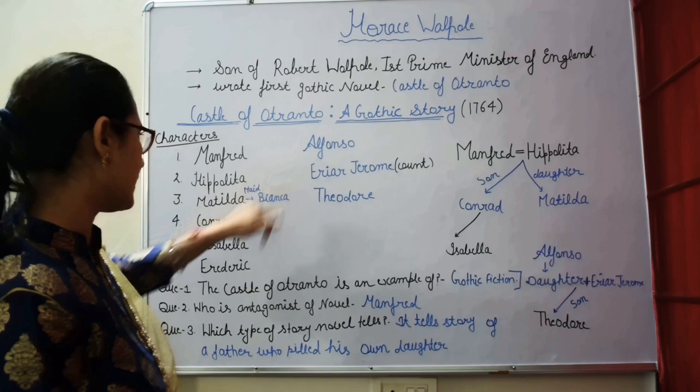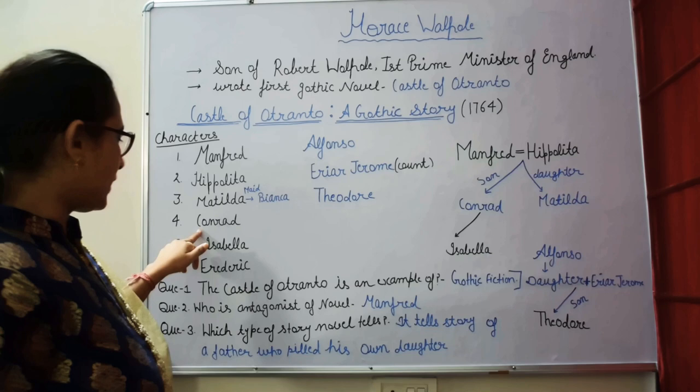Alfonso's statue is in the castle. The giant helmet comes from the statue and Conrad is killed by it — this is Conrad's death.